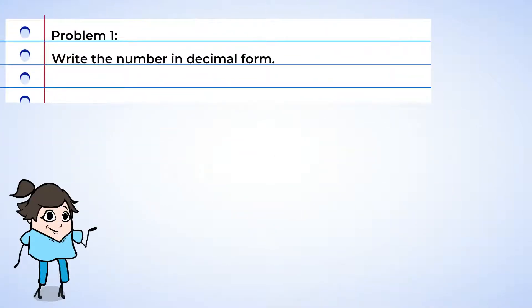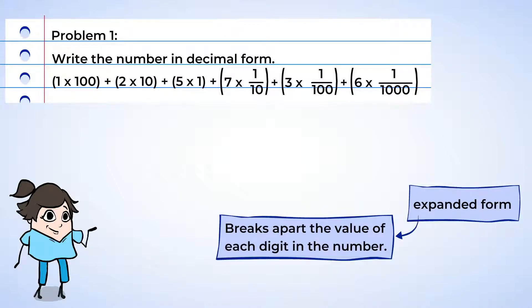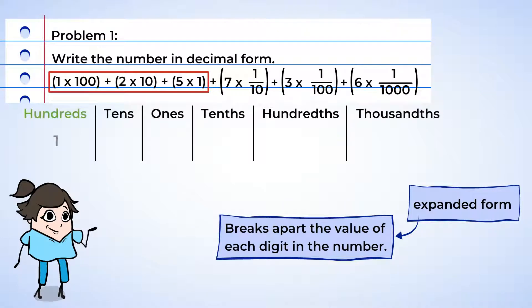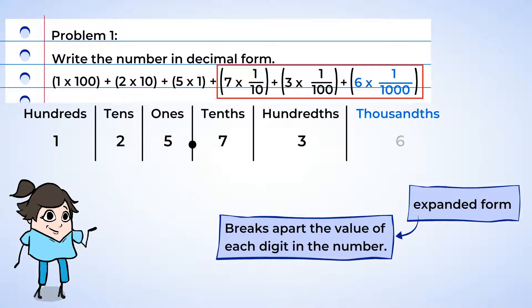Moving on. Here, Mia has written down the number 125 and 736 thousandths in its expanded form. Expanded form? Well, that breaks apart the value of each digit in the number. Right! The portion to the left of the decimal point looks familiar. There's 100, two tens, and five ones. But the numbers to the right of the decimal point look a little different though. The seven times one tenth represents seven tenths. We can write a tenth as a fraction and use multiplication to show that there are seven. And next, we have three times one hundredth to show the value of three hundredths. Last, we have six thousandths, or six times one thousandth.